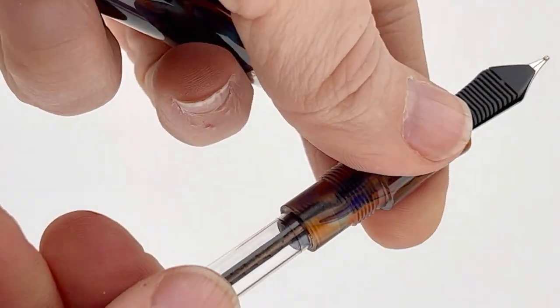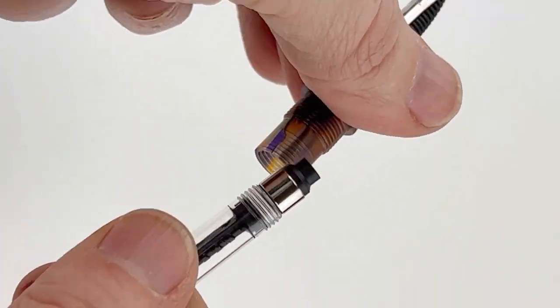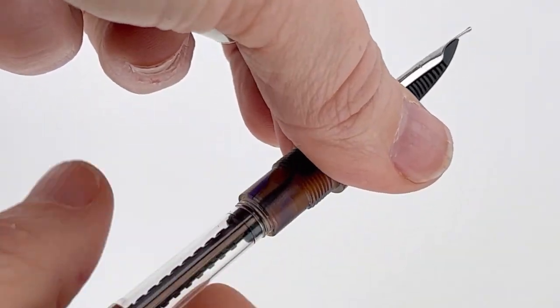It is a threaded converter with the Joya name on it, and it's a piston style. You can also use a standard international size ink cartridge if you'd like.